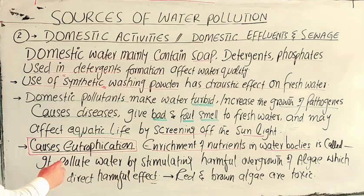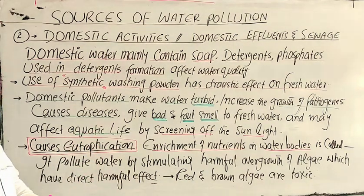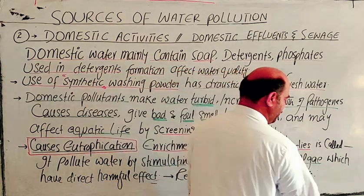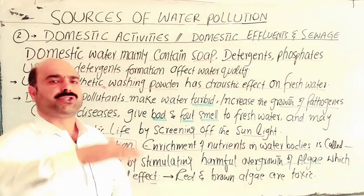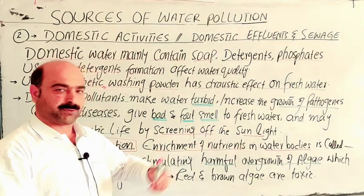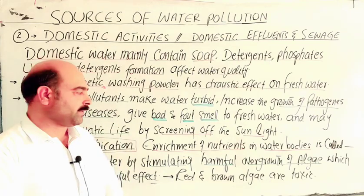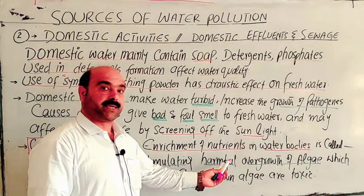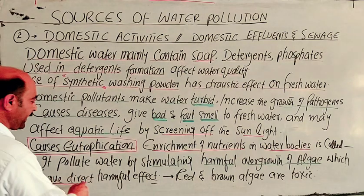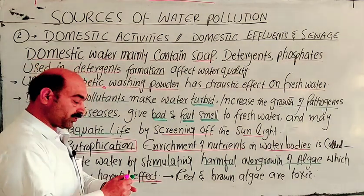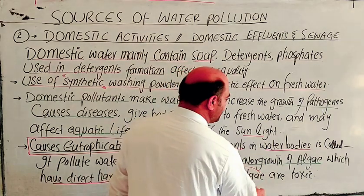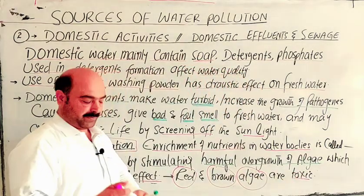What is eutrophication? It pollutes water by stimulating the harmful overgrowth of algae. When algae increases due to nutrient enrichment, it results in a huge growth which has a direct impact on aquatic life. We refer to red and brown algae — these are toxic and harmful to aquatic life.